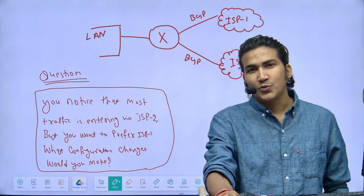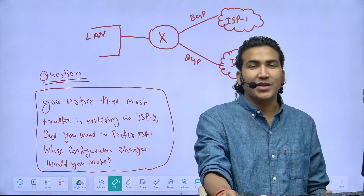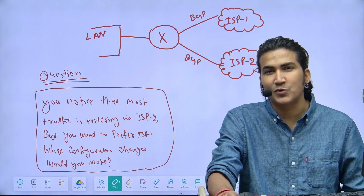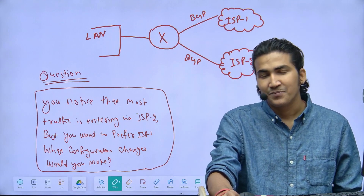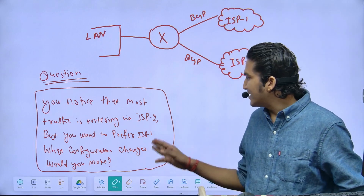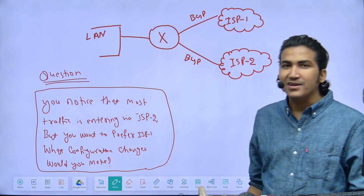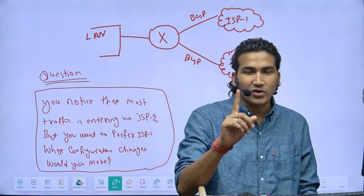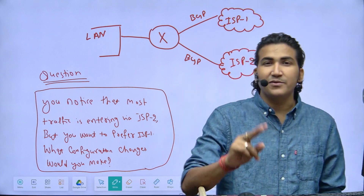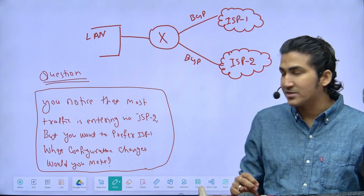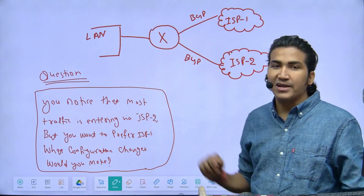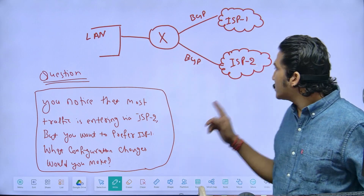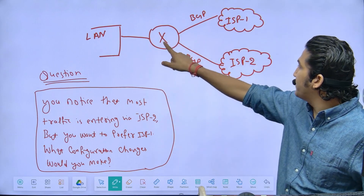Welcome to the scenario-based network engineer interview question and answer series. Today's scenario shows one router connected with two different ISPs as well as a LAN device — it may be a LAN switch.